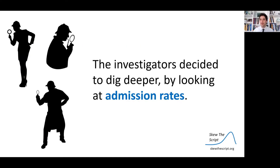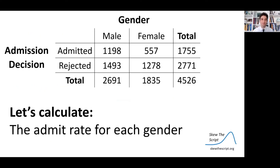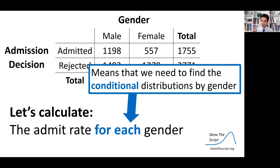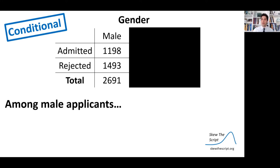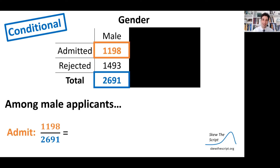To dig deeper, we need to look at conditional distributions — the admission rate for each gender. When you see language like 'among each' or 'for each,' that's a signal to find the conditional distribution by a certain variable, in this case gender. Looking among male applicants only, we have a new total: the total number of male applicants. Out of 2,691 male applicants, 1,198 were admitted. Calculating that proportion gives 44.5% of male students were admitted.